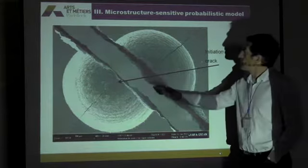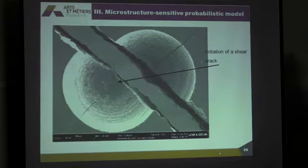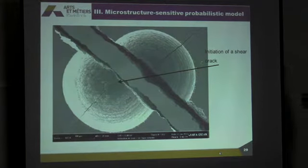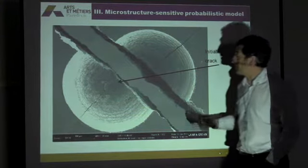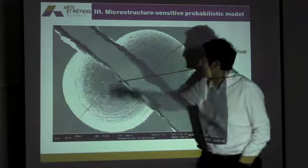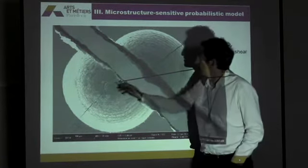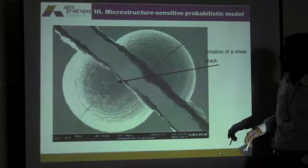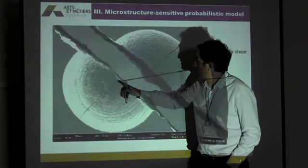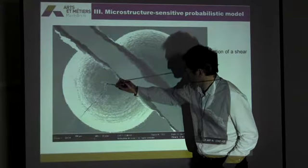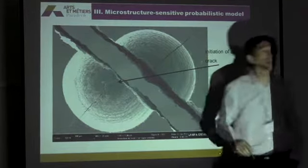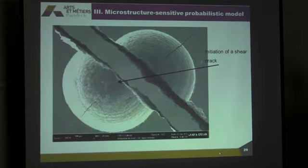And we also, in our case with our observations, observed that kind of behavior. You see here — it's a torsion test with a defect of 500 micrometers diameter. And you see here, at the initiation, a shear crack here and a shear crack here at the bottom of the defect.